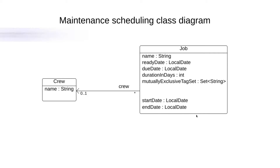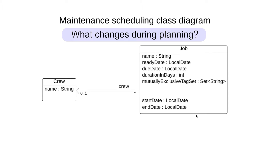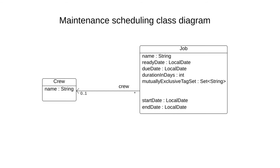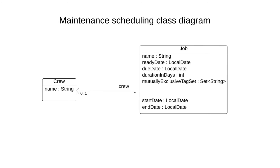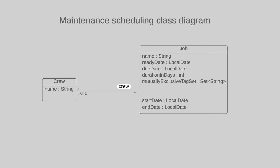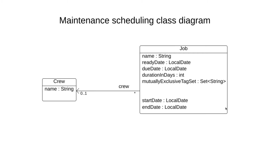Ask yourself: what changes during planning? That's the most important decision when starting a TimeFold project. TimeFold cannot pick a different name or ready date for a job — those are fixed. What it can decide is which crew is going to do each job, and when the job is going to start — the start date. By choosing the start date, it will automatically also determine the end date as a side effect.